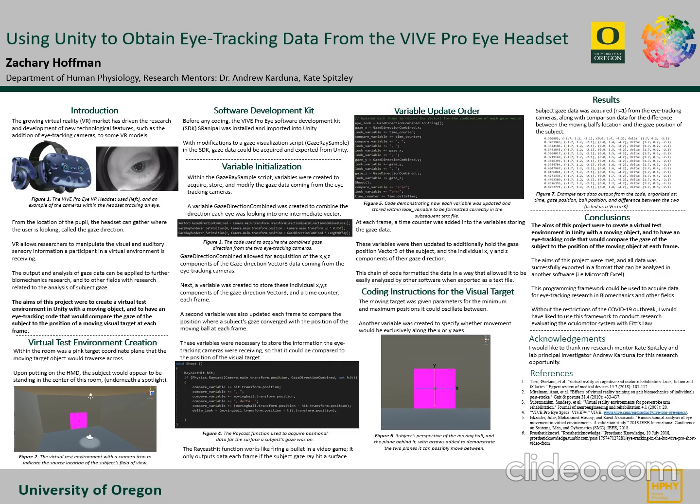Most VR headsets are composed of two screens within the headset that display images onto the eye and make the user feel like they're in an entirely different environment. New advancements in VR technology have allowed for eye tracking cameras within the headset that track the movements of the pupil and the position to determine where the subject is looking in the virtual environment.